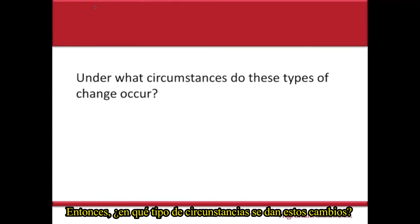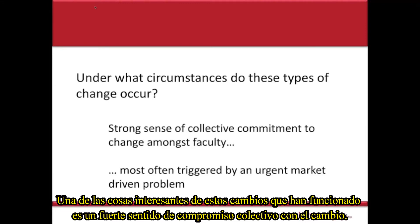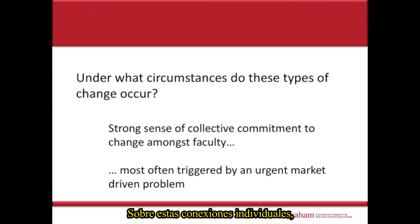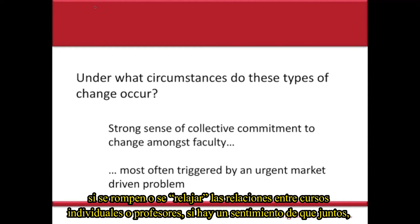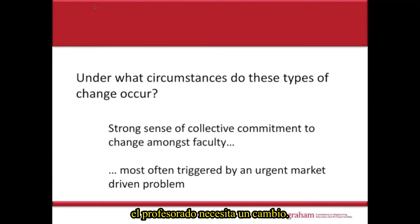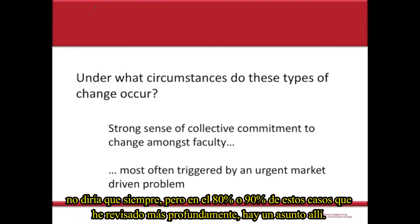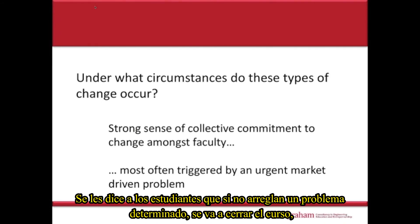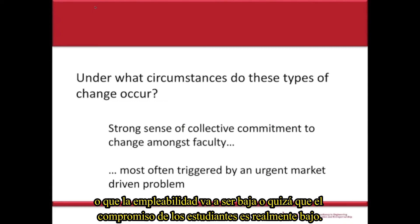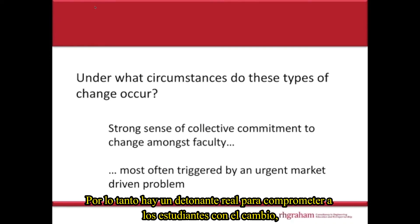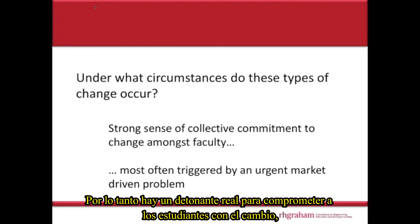So under what circumstances do these types of change occur? Among the changes that worked, there was a strong sense of collective commitment to change — with individual connections between faculty and courses loosened, there was a sense that the faculty together needed to make change. Most often, this collective commitment was triggered by an urgent market-driven problem. In 80 or 90% of the cases, when you dig deeper, there's an issue: student intake has fallen, the dean has said the undergraduate course will be shut down unless it's fixed, or graduate employment is very poor, or student engagement is critically bad. There's a real trigger to engage collectively with a programme of change, looking beyond individual courses.